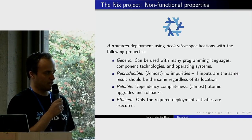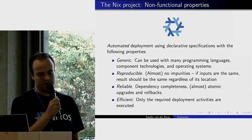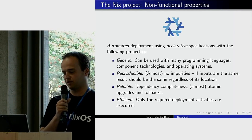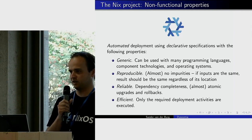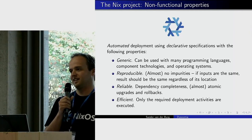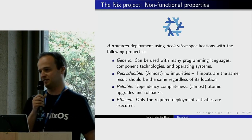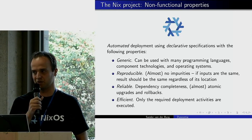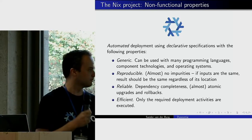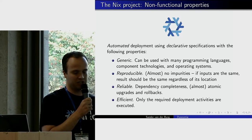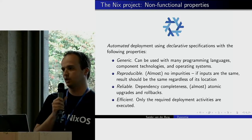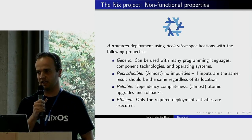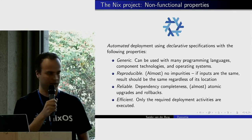Another interesting property is reliable deployment. Nix offers dependency completeness and almost atomic upgrades and rollbacks. In NixOS, restarting systemd isn't atomic, but the static parts of the system are upgraded atomically. And of course Nix is efficient in that it will only carry out the things it needs to do, without doing any unnecessary work.